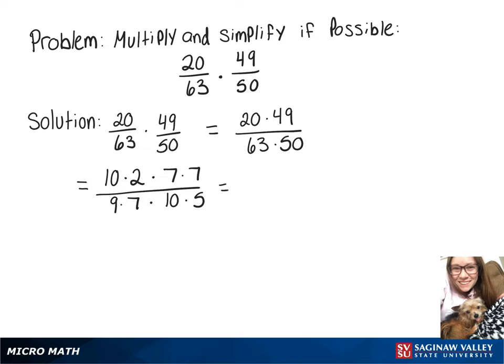Since we have a 10 on top and 10 on bottom, we can write that in its own fraction, 10 over 10. Same with 7 over 7 because we have a 7 on top and on bottom. And then what we have left is 2 times 7 over 9 times 5. Since 10 over 10 and 7 over 7 are just 1, those will go away.